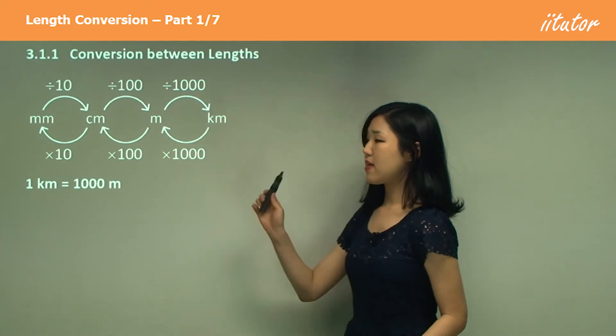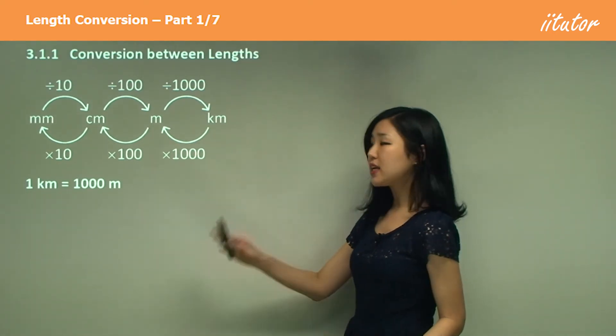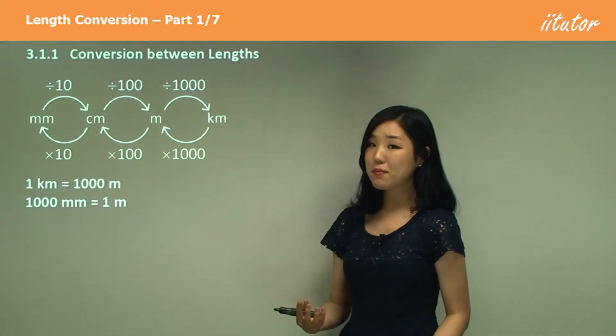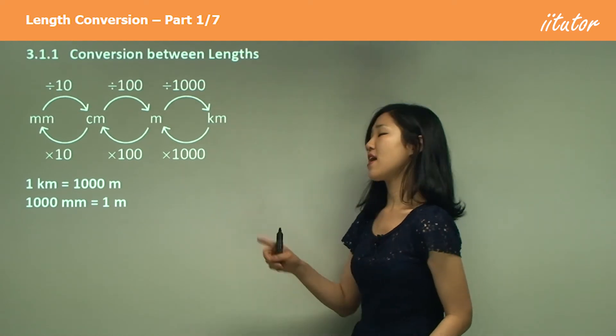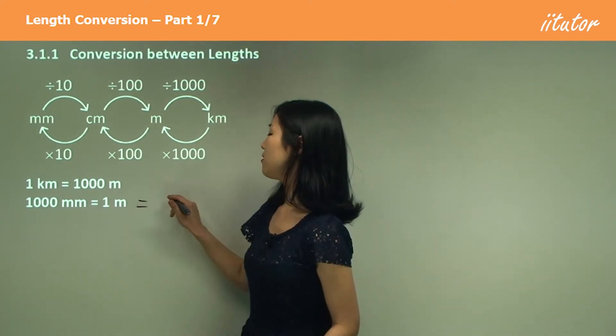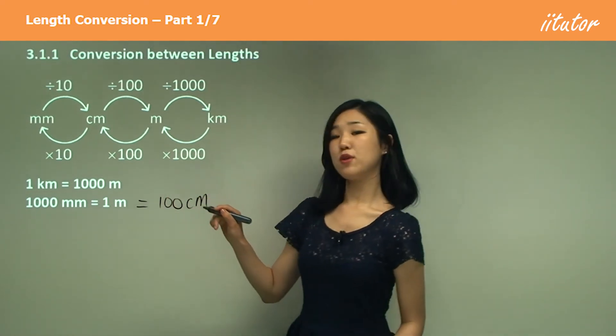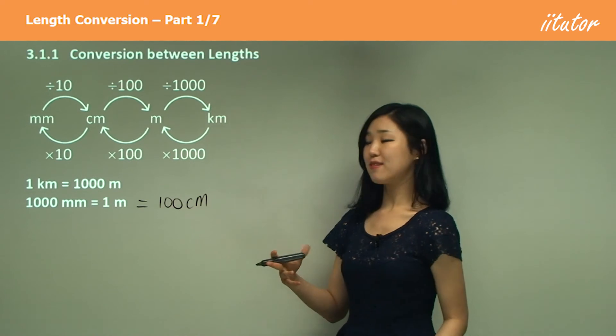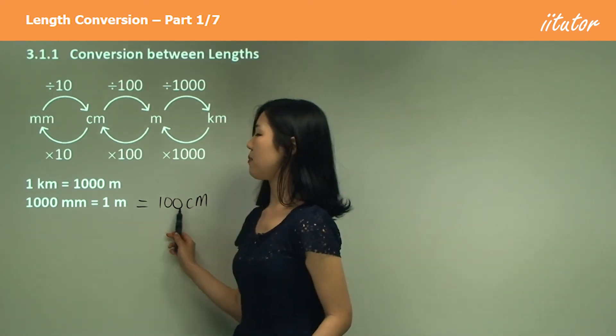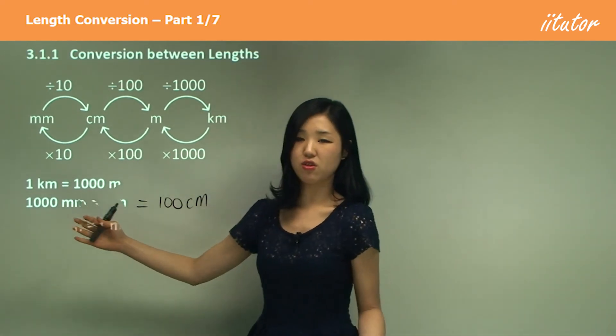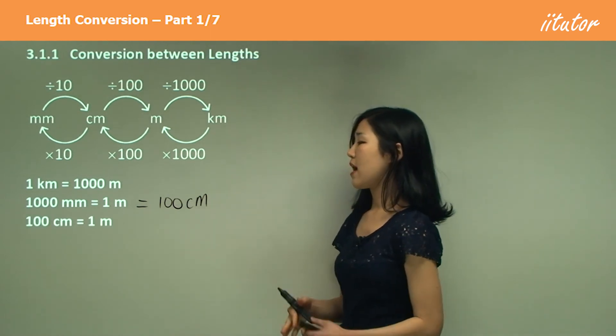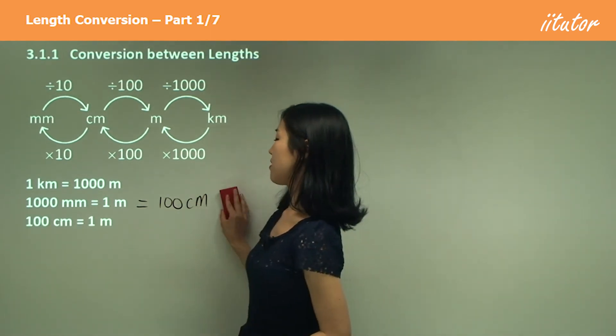So you all know that there's 1000 metres in a kilometre, there's 1000 millimetres in one metre, because you know that one metre is 100 centimetres. And we know that there's 10 millimetres in a centimetre, so we just simply multiply that by 10 to get it down. That's all you need to do. And we all know that 100 centimetres in a metre, as I just said.